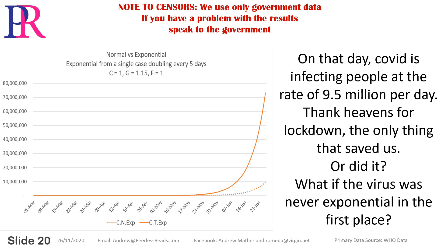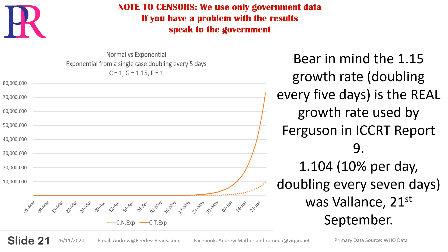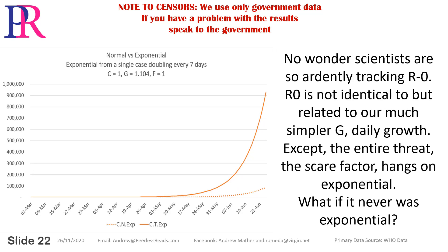What if the virus was never exponential in the first place? Bear in mind the 1.15 growth rate — doubling every 5 days — is the real growth rate used by Ferguson in ICCRT Report 9. 1.104, or 10% per day, doubling every 7 days, was Valence on the 21st of September. No wonder scientists are so ardently tracking R0. R0 is not identical to, but related to, our much simpler G, or daily growth. Except the entire threat — the scare factor — hangs on exponential. What if it was never exponential?